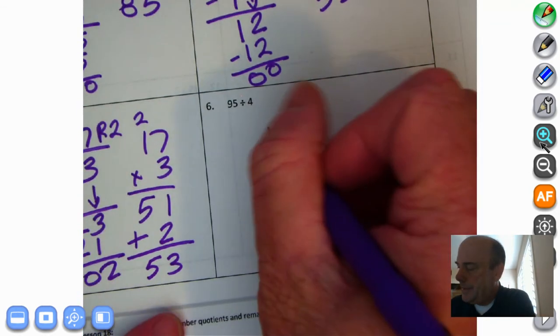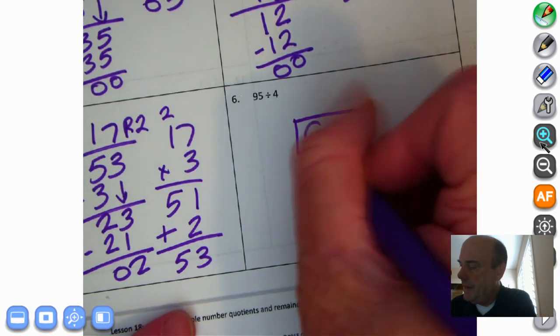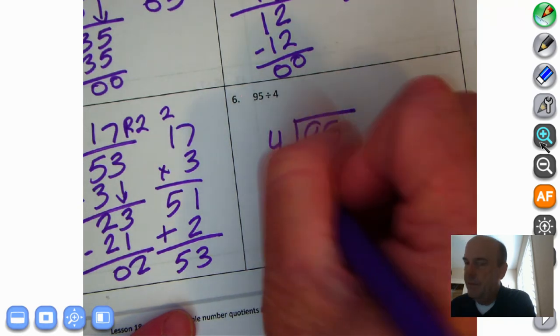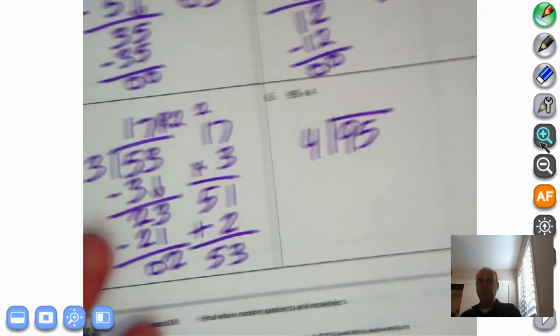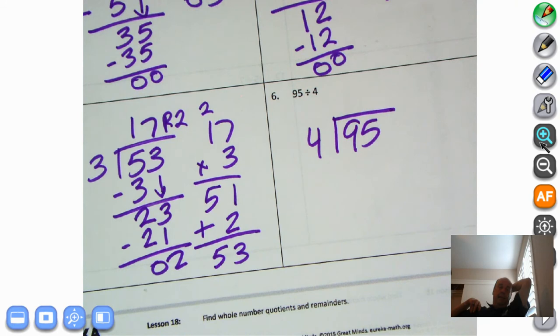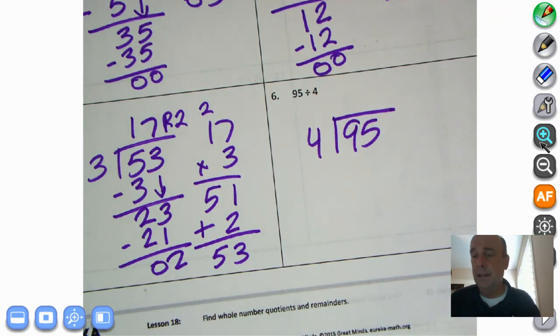Try this one on your own. We have 95 divided by 4. Give it a shot. Use your multiplication chart if need be. And welcome back. I hope you paused the tape and I hope you gave it a try. It's okay to get these things wrong. That's how you're going to learn. Are you incorrect? It's okay. That's how you learn. Let's get growth mindset.